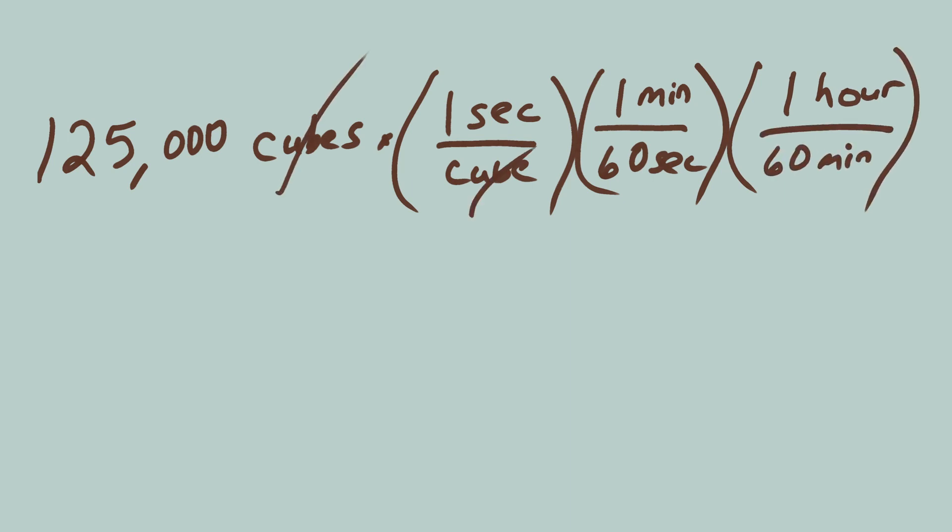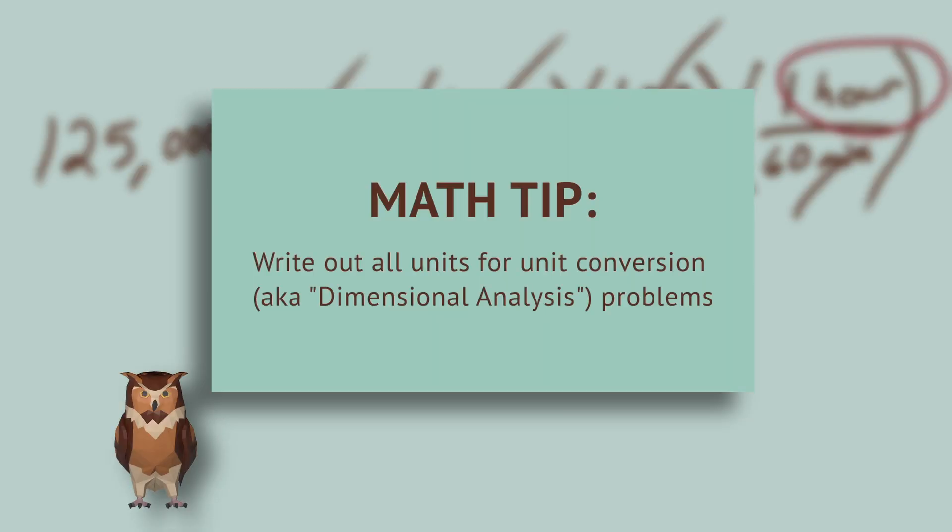We set up the problem this way, so all the units will cancel except for what we want in the answer, which is hours. This method of setting up problems is known as unit conversion, or dimensional analysis. It's used a lot in science and engineering.